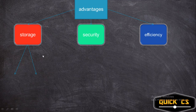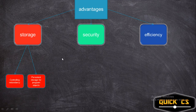The two storage advantages are: first, controlling redundancy, and second, persistent storage for program objects. When it comes to security you have three advantages: backup and recovery, restricting unauthorized access, and enforcing integrity constraints.